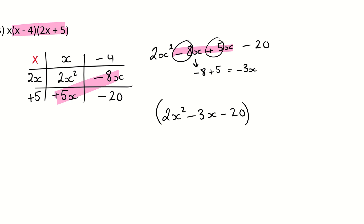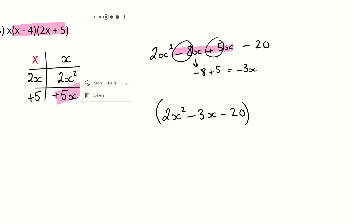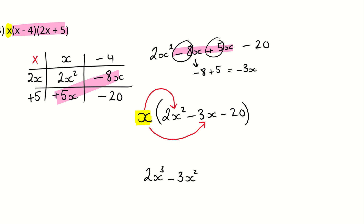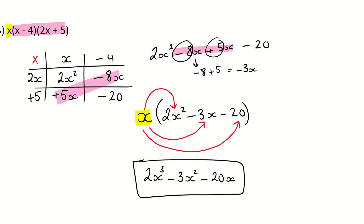That is the result of the double bracket, but you still have to multiply everything by x. So everything in that bracket has to be multiplied by that x. 2x squared times x is 2x cubed, because there are now 3 of them — x squared multiplied by another x. The second part: negative 3x times x gives us negative 3x squared. And the last part: negative 20 times x is negative 20x. Everything in the bracket has to be multiplied by x. And that is your final answer.